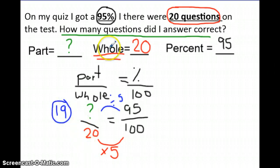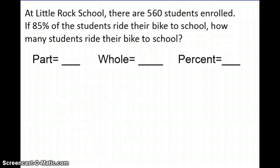So that means this person got 19 questions correct in order to get a 95 on their test. Let's look at our second example.